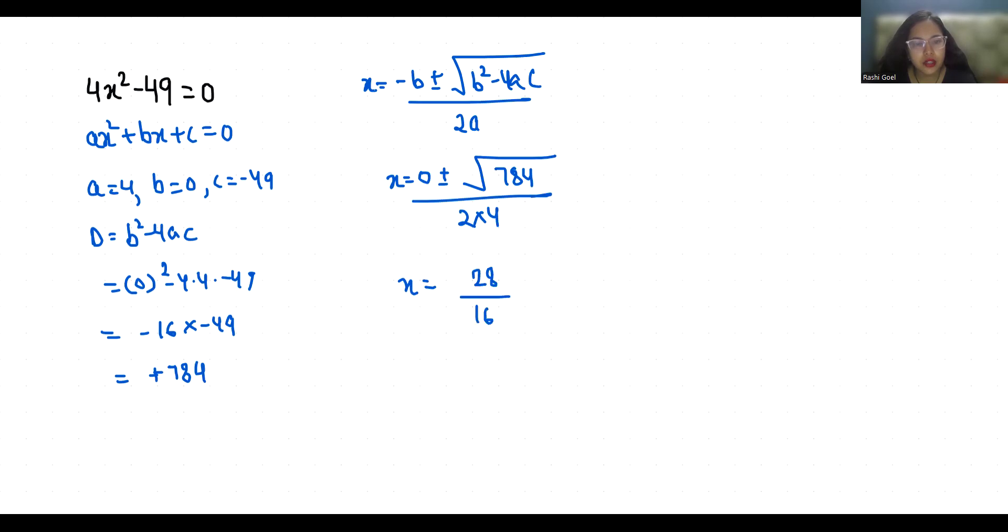So x equals plus minus, I am going to reduce it with 4. 4 times 4 is 16, 4 times 7 is 28. It is 7 by 4. So x1 is 7 by 4.